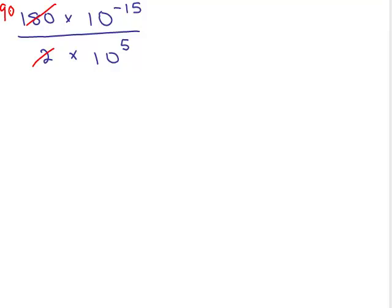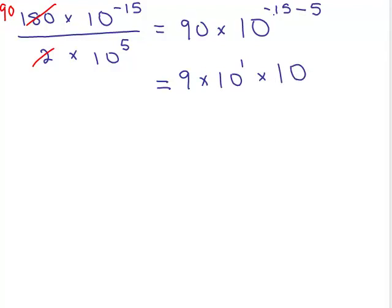I'm going to get 90 times 10 to the, we've got to subtract. Be very careful here. It's -15 and subtract 5. I'm also noticing, since I want to put this in scientific notation, I want to rewrite 90 as 9 times 10^1, just like in the last problem. This is 10 to the, what's -15 minus 5? -20.